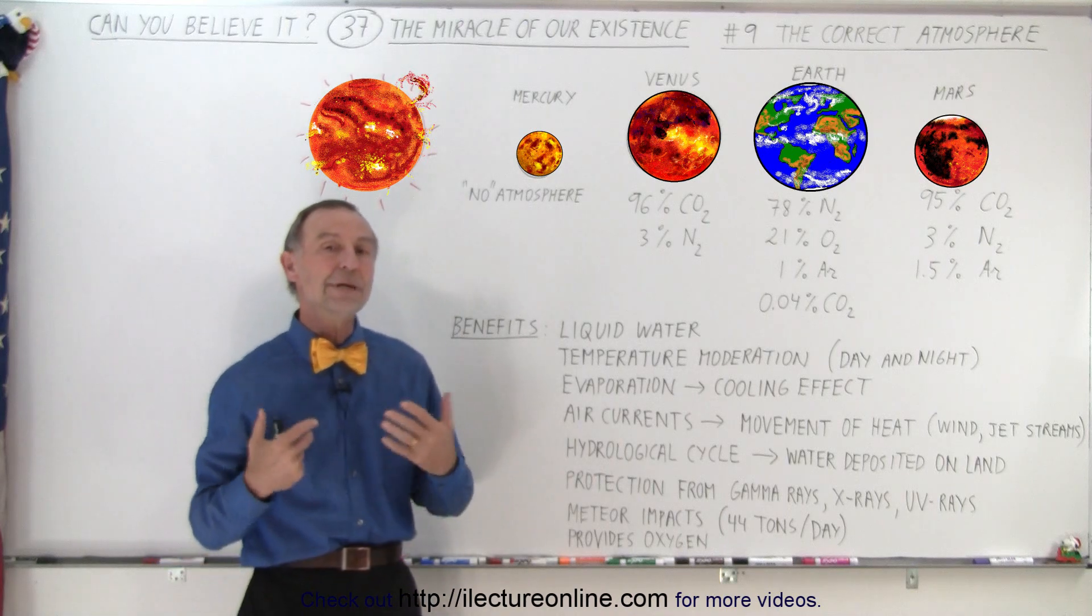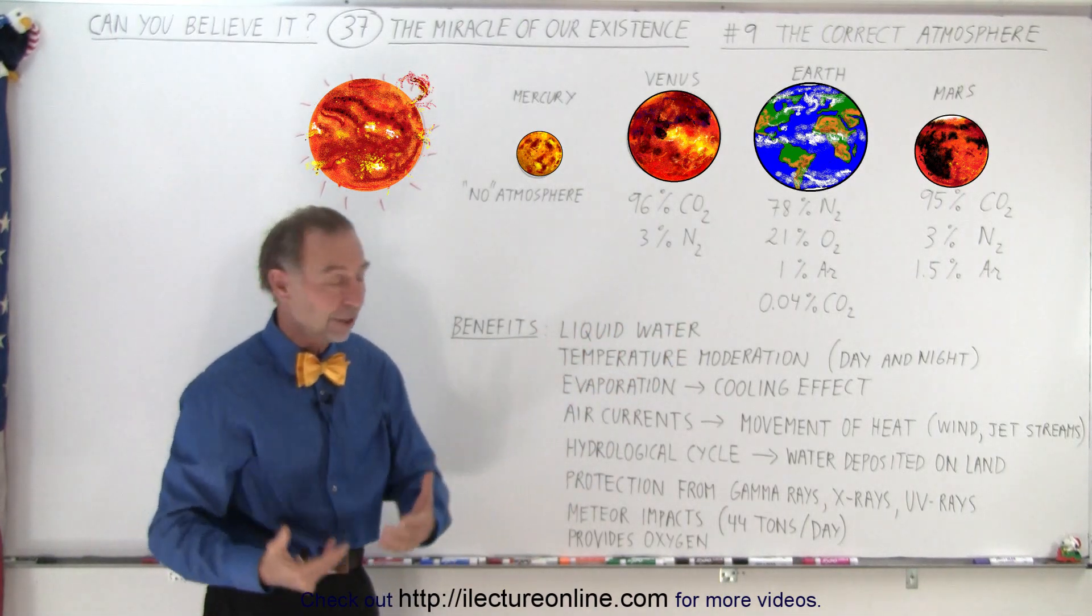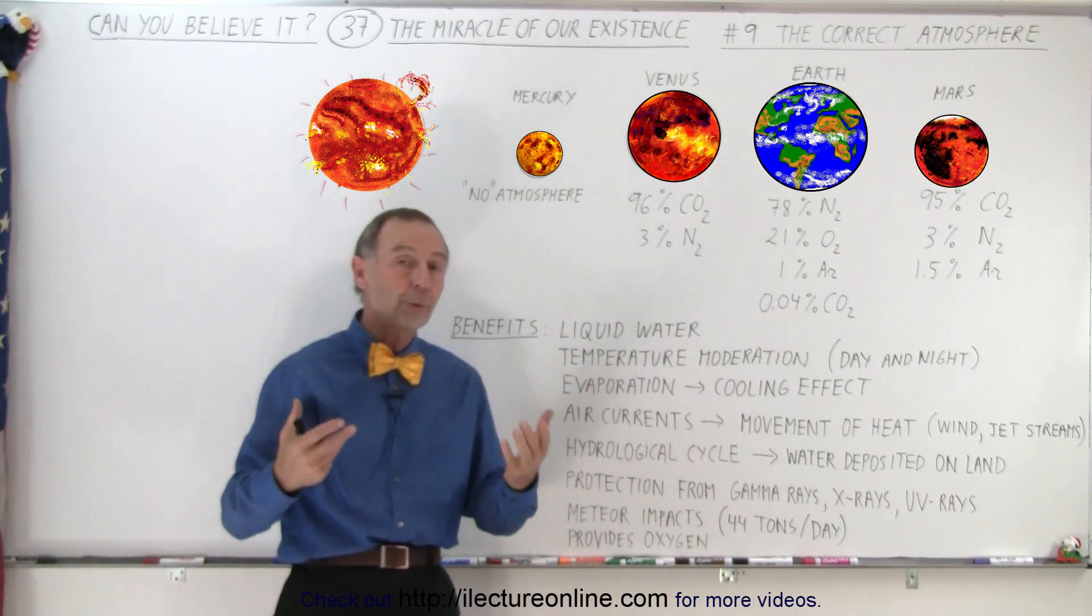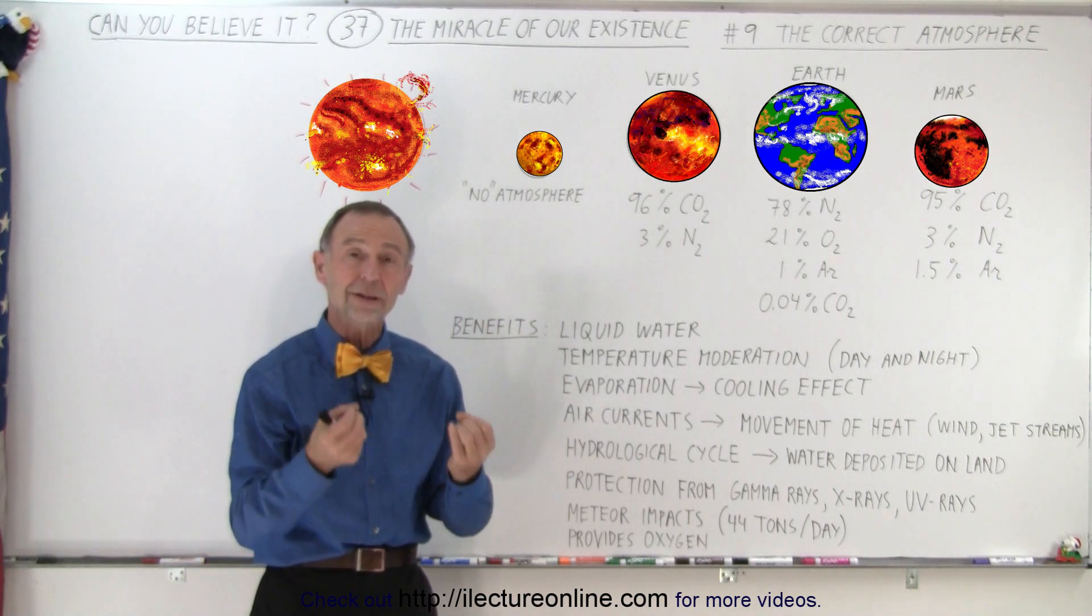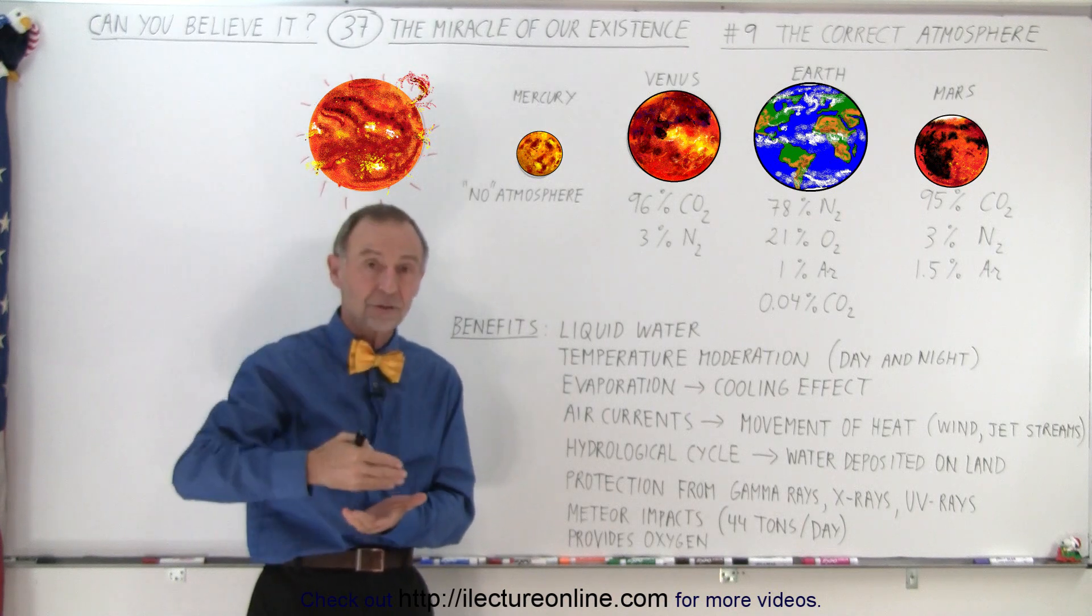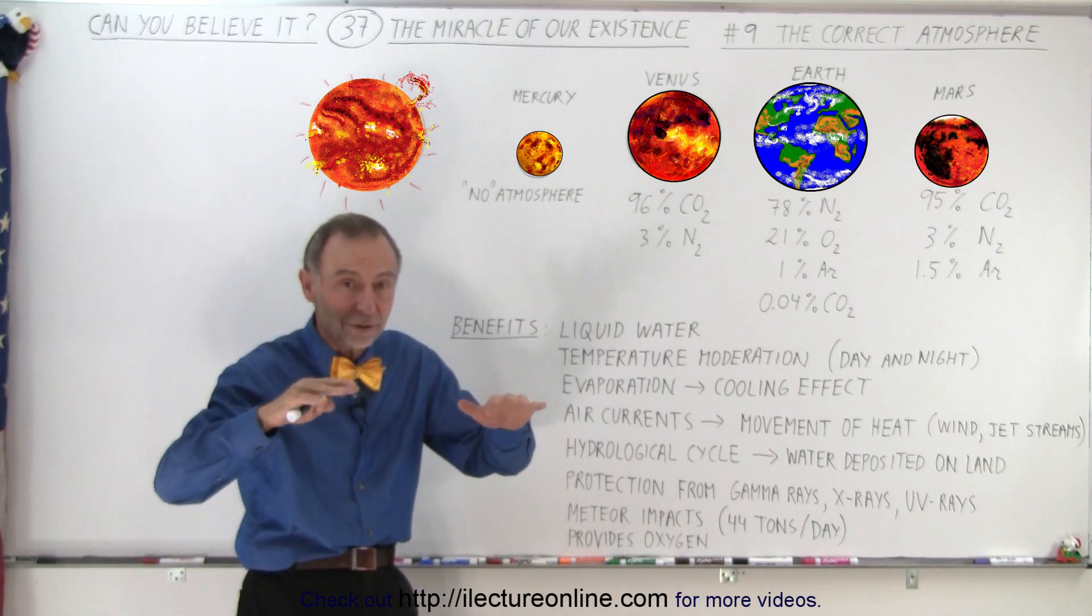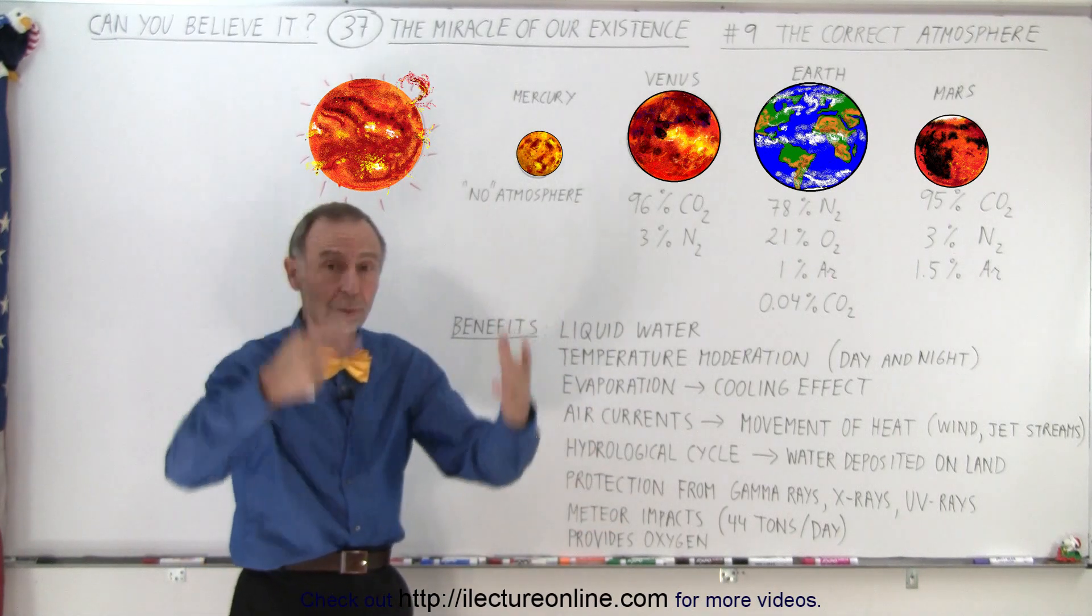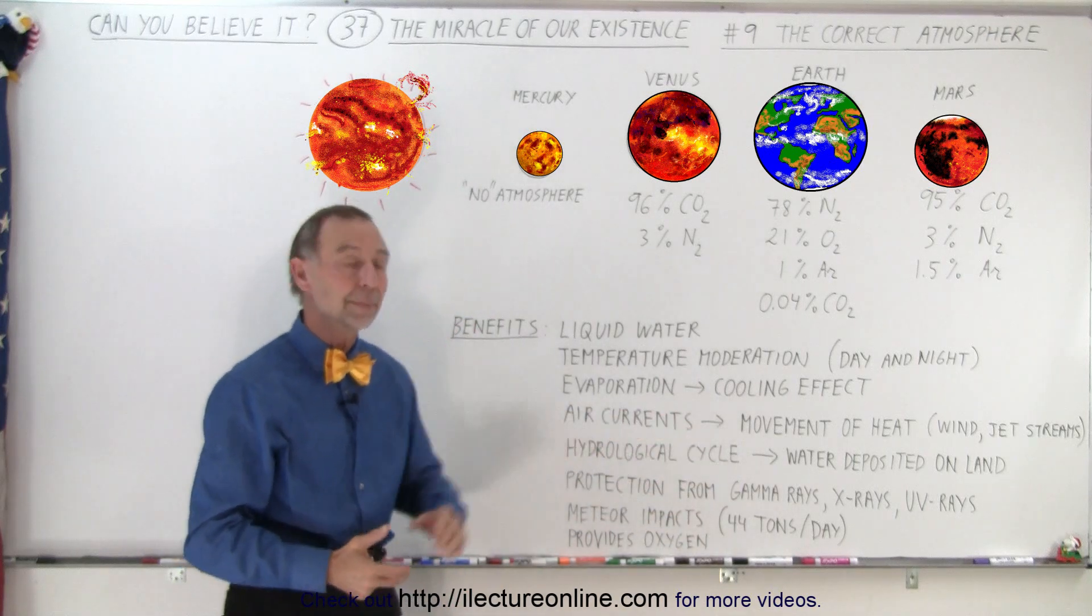Next, it protects us against meteor impacts, not the big ones. The big ones can still come right through and cause a lot of havoc and damage. But every day, it's estimated that about 44 tons of debris lands on the Earth. And most of that debris is relatively small, and our atmosphere is thick enough to be able to protect us from that. It simply burns up in the atmosphere and comes down as the rain of a little bit of dust. And so if that wasn't the case, if all that debris would come right through, it would cause a lot of damage around the world on a daily basis.